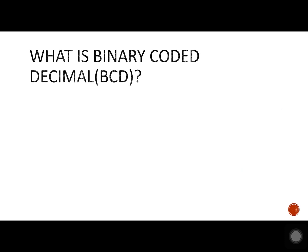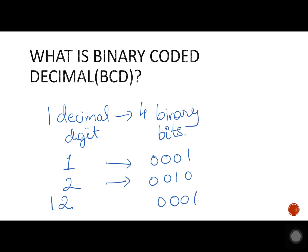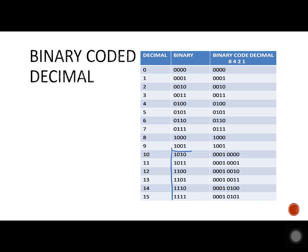What is binary coded decimal? It is basically a representation of a single decimal digit into 4 binary bits. For example, the digit 1 is represented as 0001, and 2 is 0010. For a 2-digit number like 12, the BCD value is the combination of BCD values of the corresponding digits: 0001 0010. The binary representations from 1010 up to 1111 are not used in the BCD system, so they are meaningless in BCD.